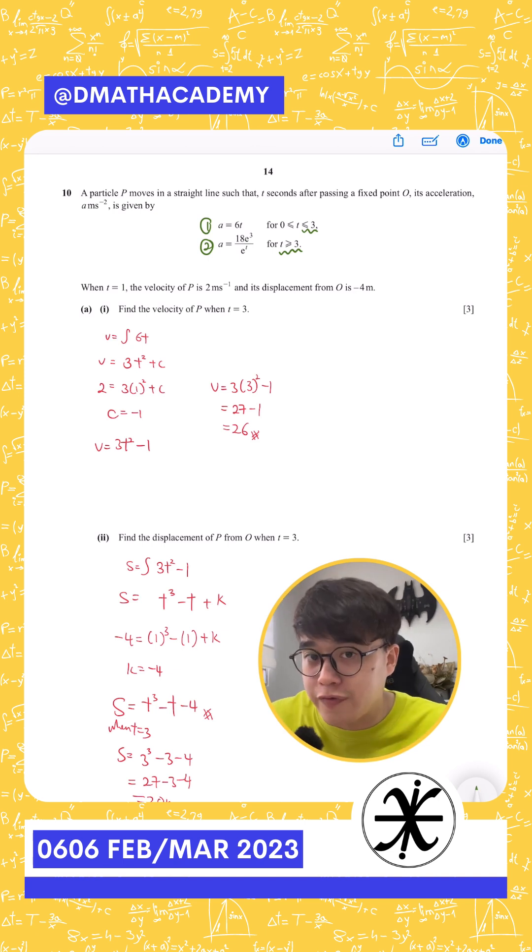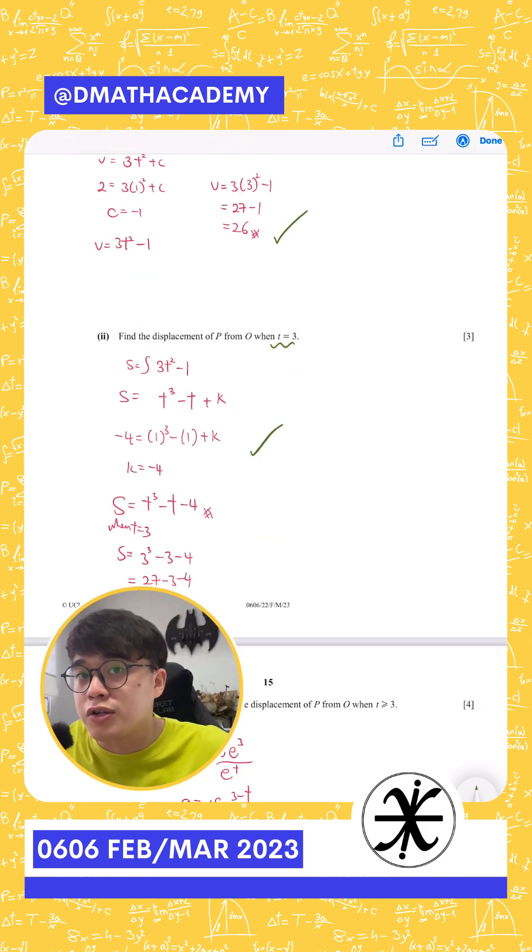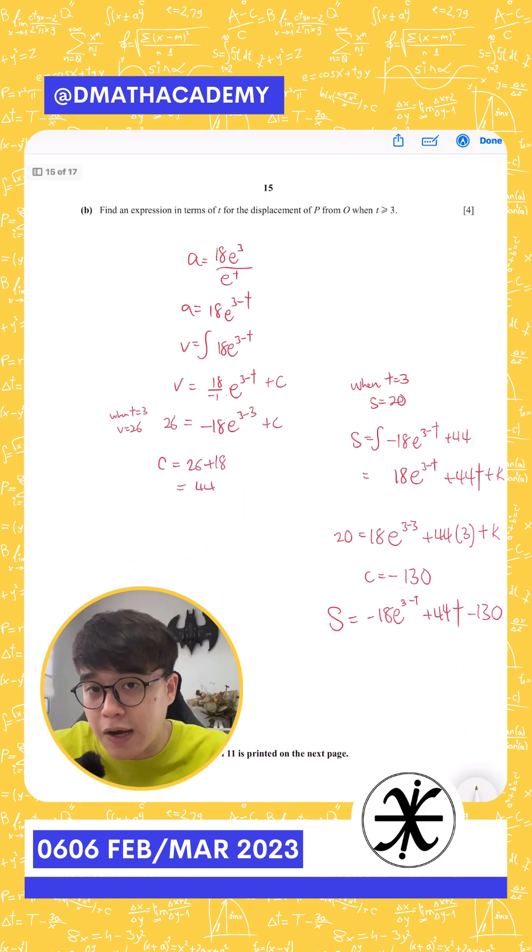So section A is quite straightforward. You'll be using the one with the inequalities 0 to 3. But in section B, please take note that values that you've gotten from section A will be transferred down here where when t equals 3 based on your calculation, you've gotten v is 26.